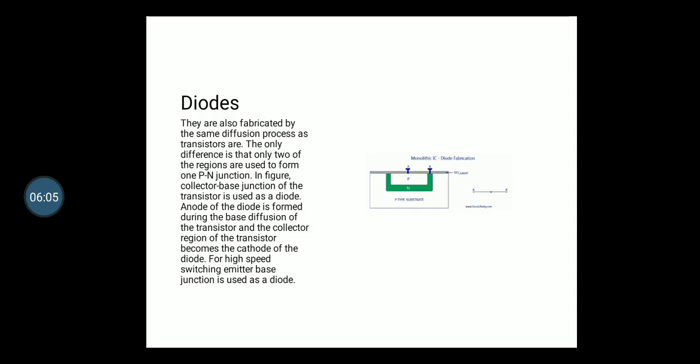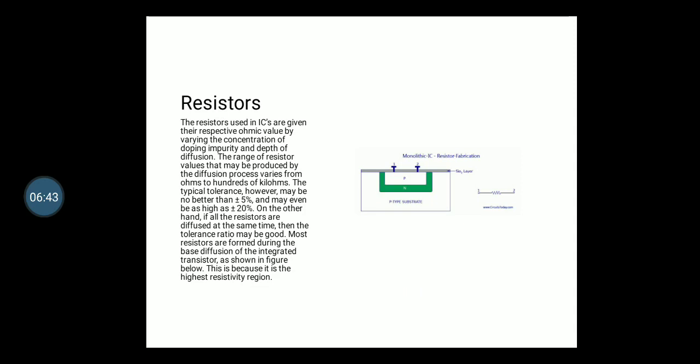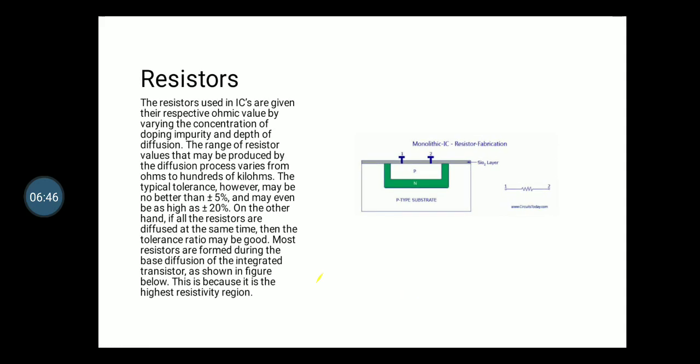Next one is the fabrication of resistors. A resistor in a monolithic integrated circuit is very often obtained by utilizing the bulk resistivity of one of the diffused areas. Four different methods of fabricating resistors are available: one is the diffused resistor, epitaxial resistor, pinched resistor, and the thin film resistor. All these resistors are fabricated by the same process of fabrication. These resistors are given in their respective ohmic value.